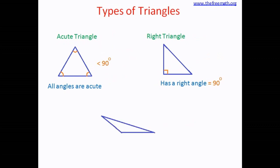Here is the next type. You can see that this triangle has an obtuse angle — an angle that measures more than 90 degrees. Such kind of triangle is called an obtuse triangle. Can there be more than one obtuse angle? No. There can be only one obtuse angle because all the angles of a triangle sum to 180 degrees. If one angle is more than 90 degrees, no other angle in the triangle can also be more than 90 degrees.